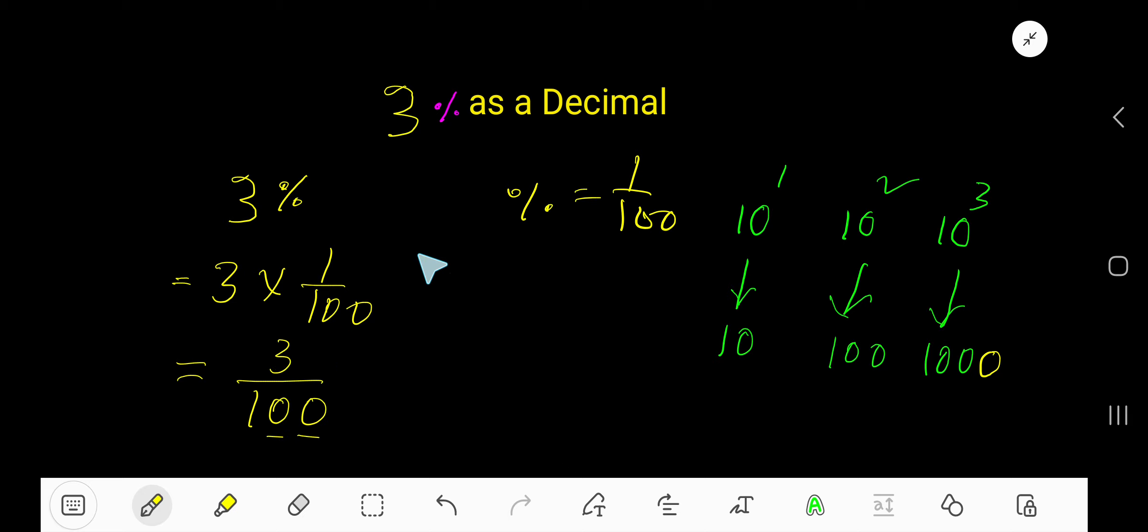The decimal point will move from right to left side, two digits or two places. Since three is a whole number, we have to consider decimals here.